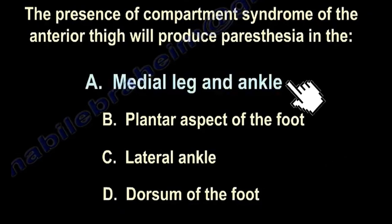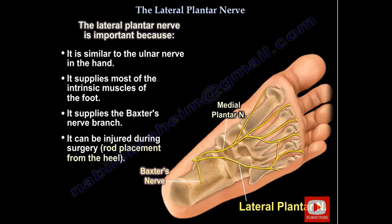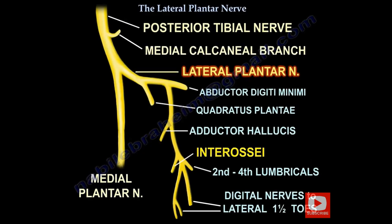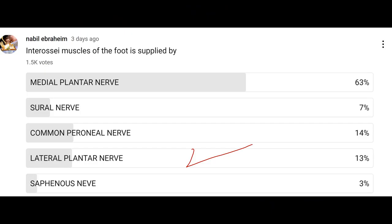The lateral plantar nerve is a branch of the posterior tibial nerve. It is similar to the ulnar nerve in the hand — it supplies most of the intrinsic muscles of the foot, supplies the Baxter nerve branch, and can be injured during surgery, such as placement of a rod from the heel. The lateral plantar nerve gives all the interosseous muscles of the foot — almost like the ulnar nerve in the hand.